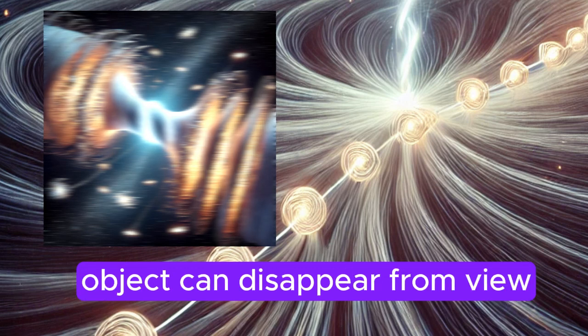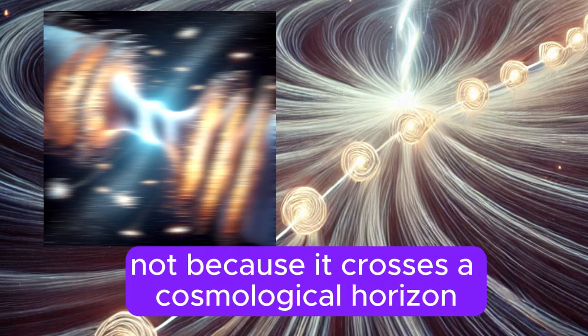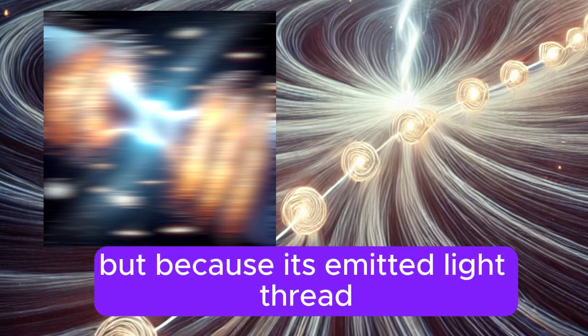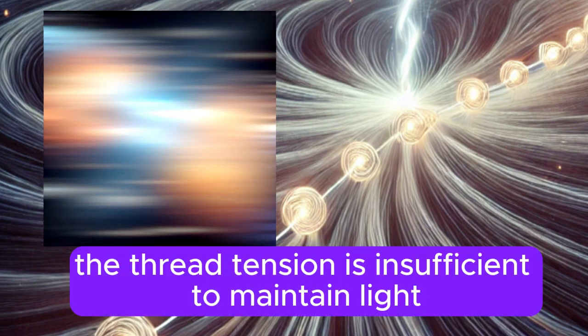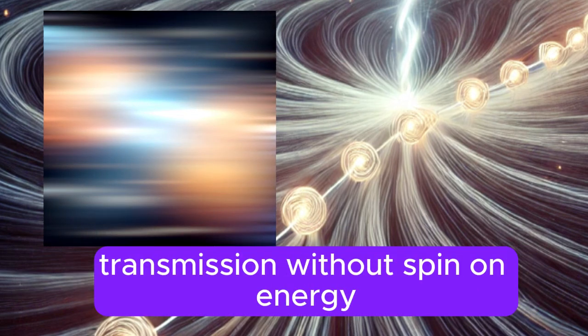This model implies that an object can disappear from view not because it crosses a cosmological horizon, but because its emitted light thread can no longer sustain its propagation due to energy exhaustion. The thread tension is insufficient to maintain light transmission without spin-on energy.